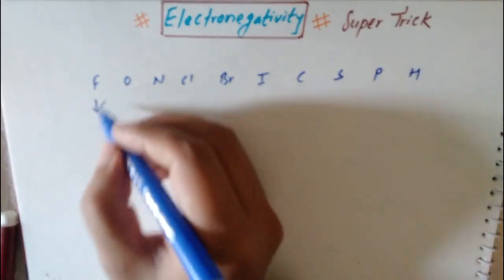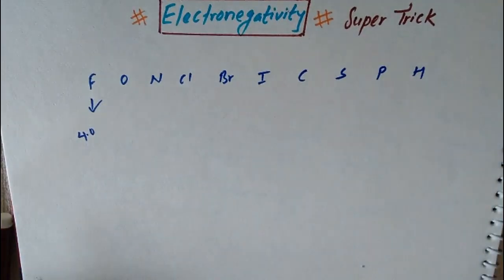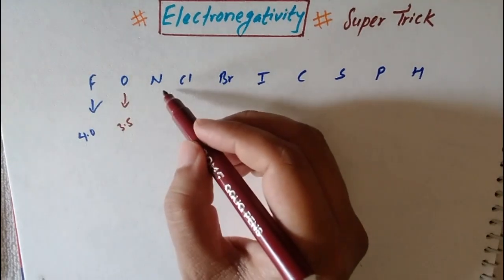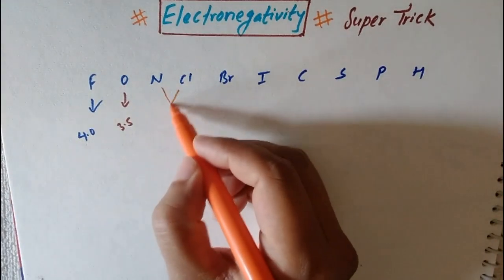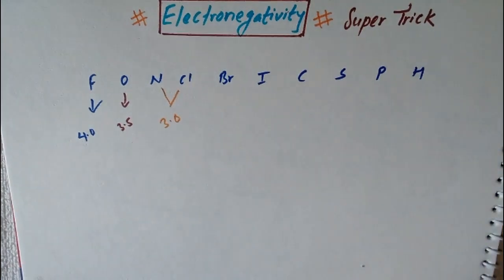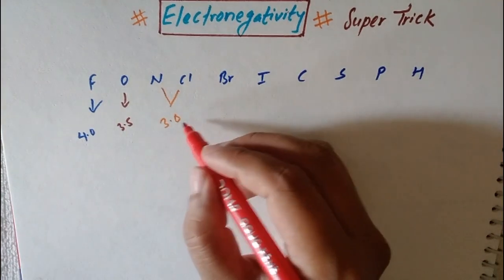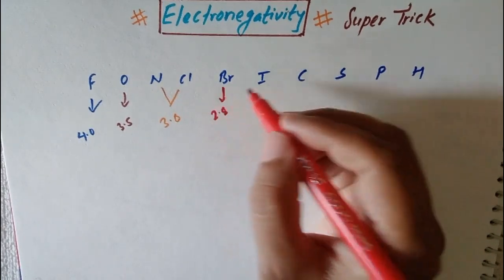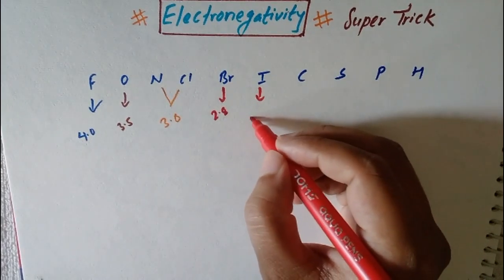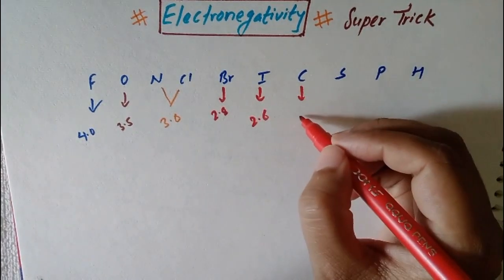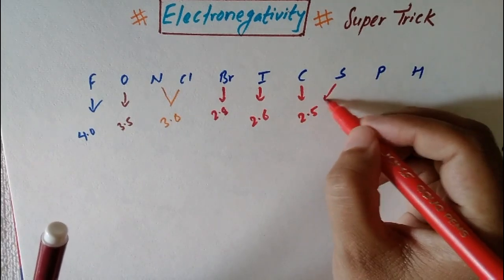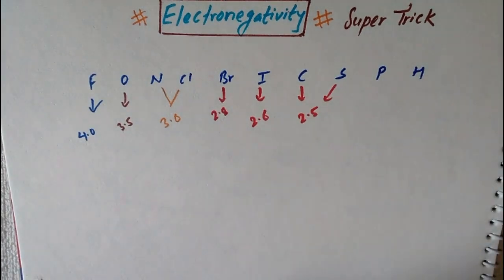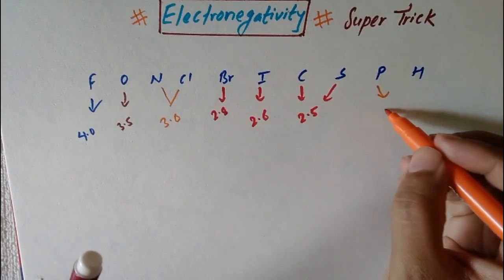Key electronegativity values to remember: fluorine is 4.0, oxygen is 3.5, nitrogen and chlorine are both 3.0, bromine is 2.8, iodine is 2.6, carbon and sulfur are both 2.5 — equal. Phosphorus and hydrogen are both 2.1 — equal. These are important values.